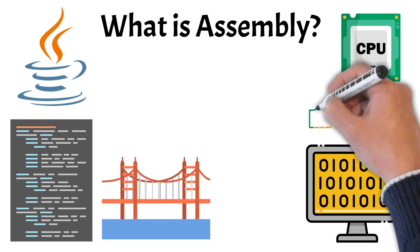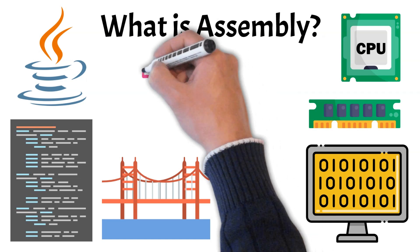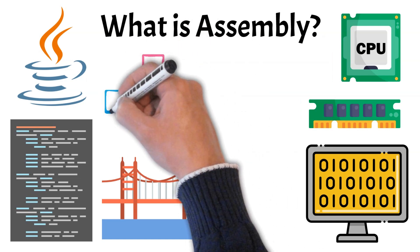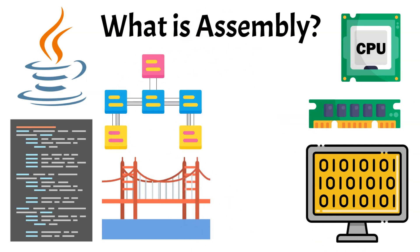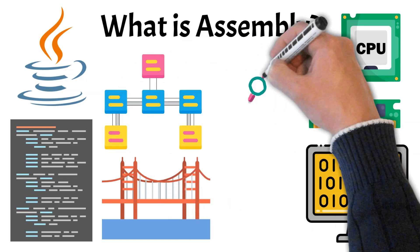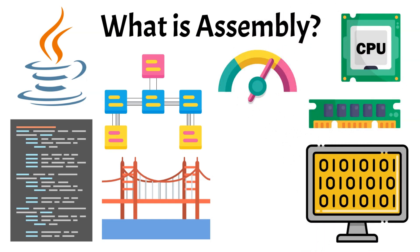Each instruction in assembly tells the computer to perform a very specific operation, like moving data between registers, performing arithmetic, or jumping to a new instruction. Because of its precision, assembly is used in areas where performance and control are critical, such as in embedded systems, game consoles, device drivers, and even operating systems.